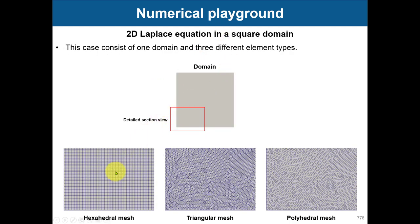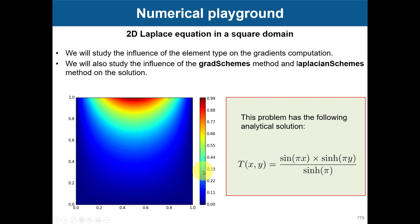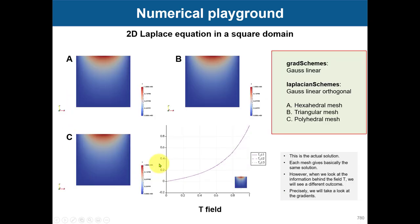What we're going to do is use different meshes: triangular and polyhedral. This is the ideal mesh - the orthogonal quad mesh. Most of the time you're going to end up using unstructured meshes depending on your domain. The analytical solution has a beautiful, nice behavior, so we can compare the different mesh approaches against it.